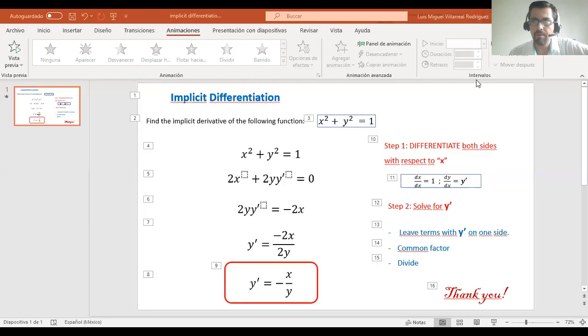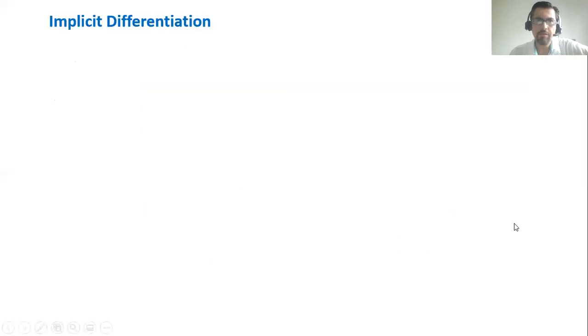Welcome back. We're going to solve a problem of implicit differentiation. The problem is to find the derivative of x squared plus y squared equals one using implicit differentiation.